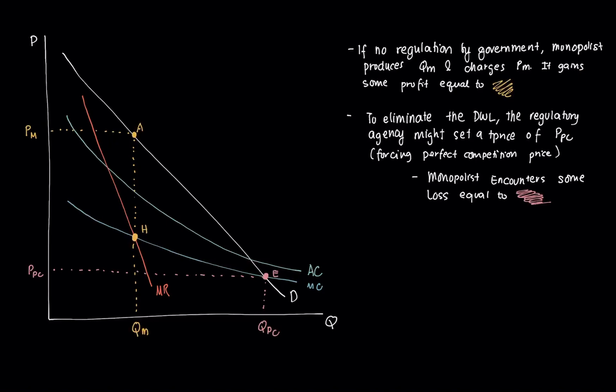If you recall, for a monopolist, the condition is MR equal to MC, right? That occurs at point H. To determine the price, you bring it up to the demand curve and charge PM, and that quantity is QM. This is without regulation.